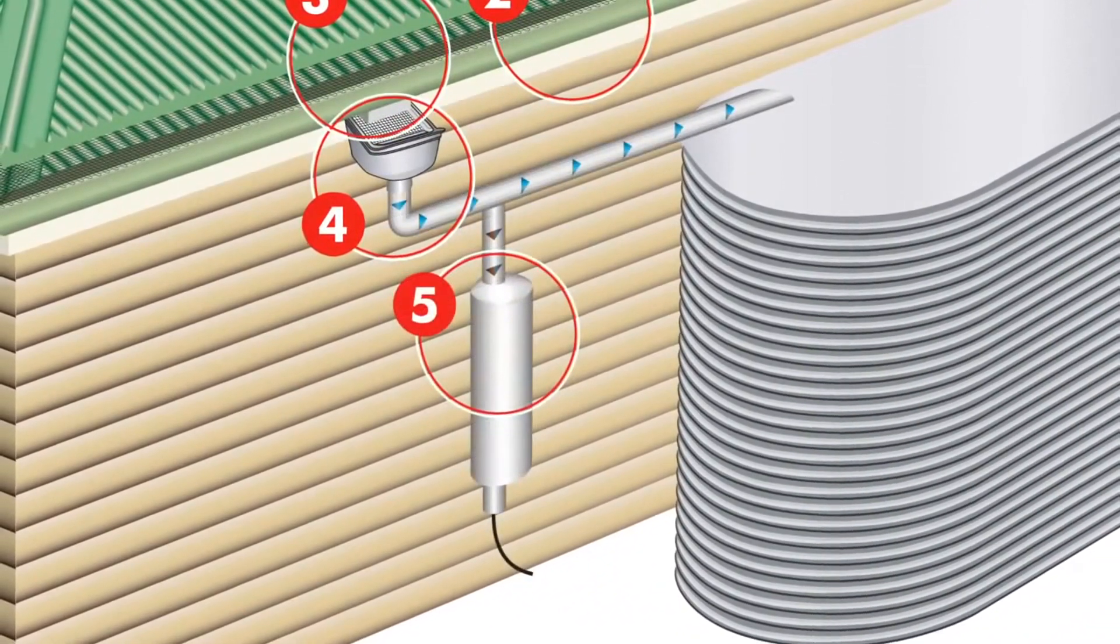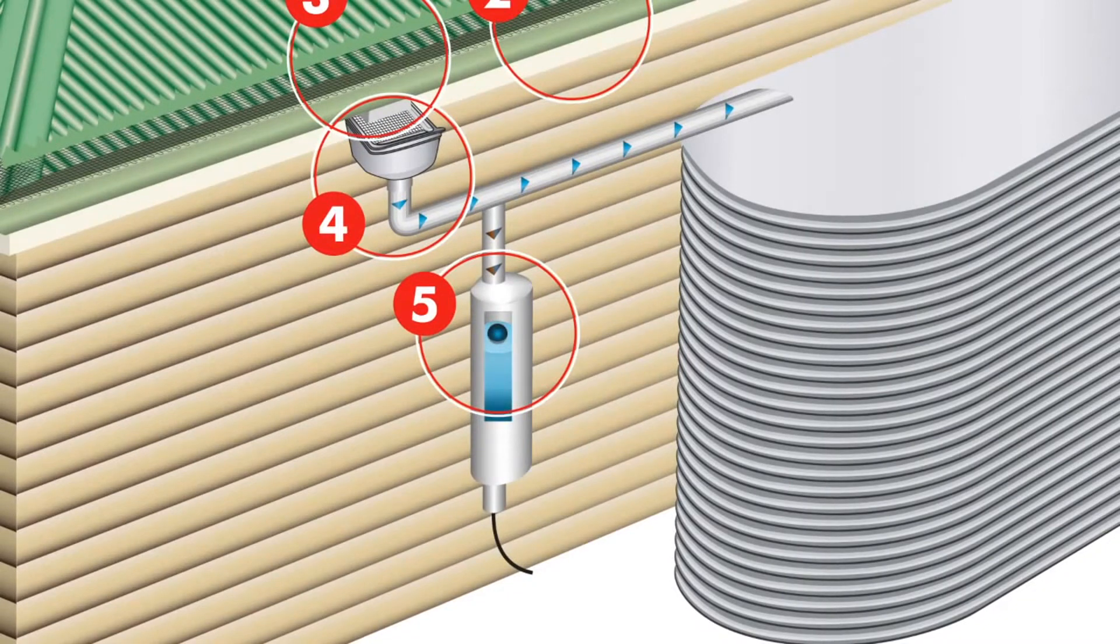Install first flush diverters to help prevent the most contaminated rainwater from entering the tank.